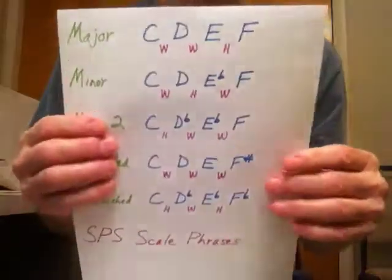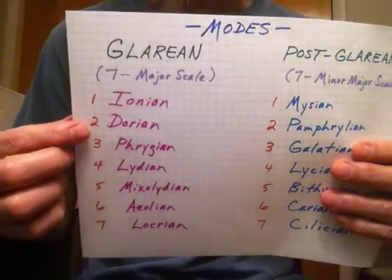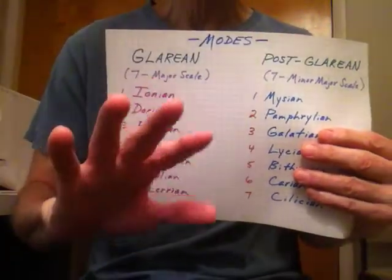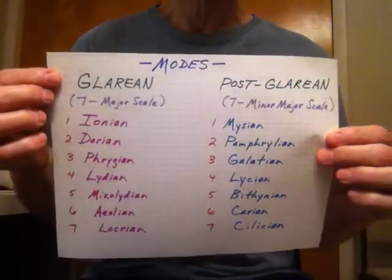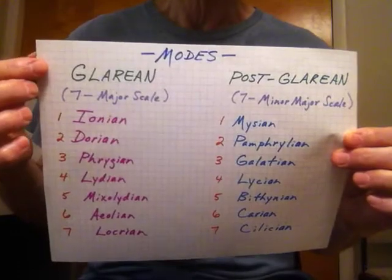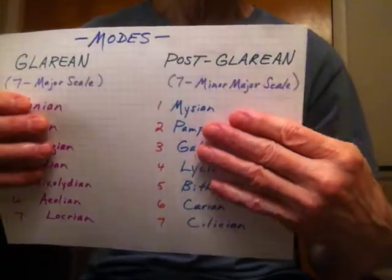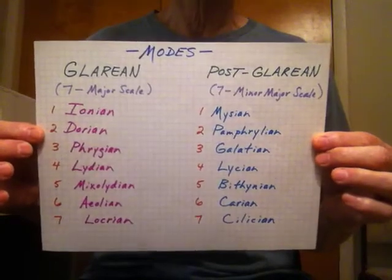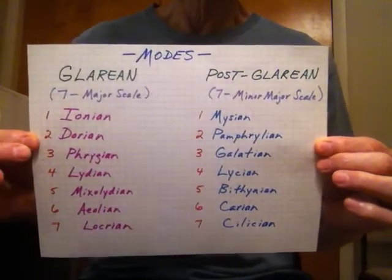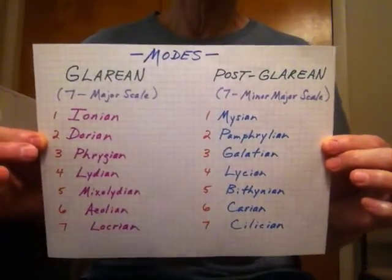I mentioned that only five of my basic eight scale phrases were needed to make the seven traditional modes. Well, actually those five can be used — they're the only ones needed to make all 14 modes. In other words, they can be used to make the traditional modes, which I call Glarian, and the more modern modes, which I call post-Glarian. So you need only those five scale phrases to make these 14 modes.